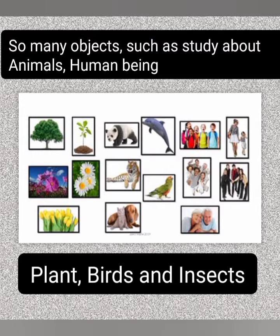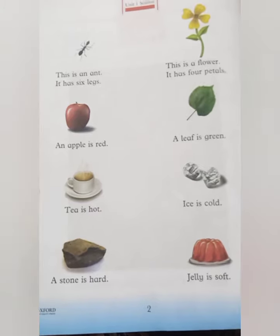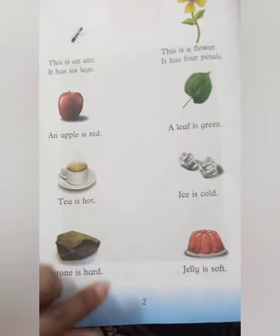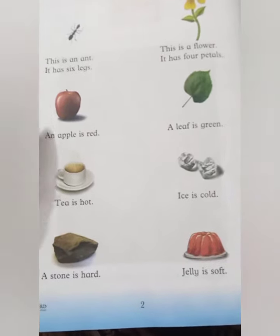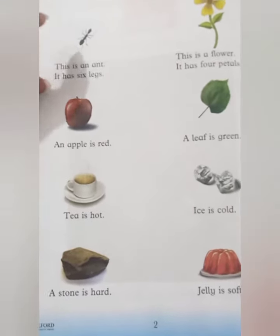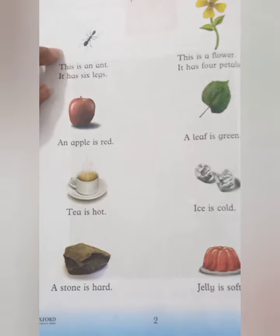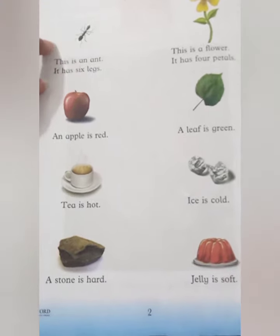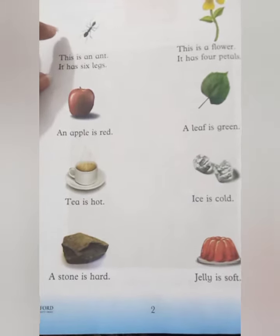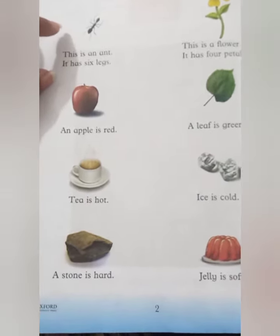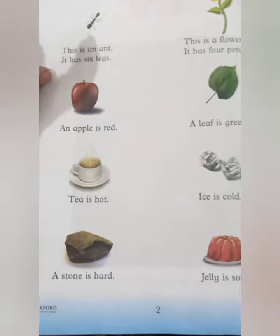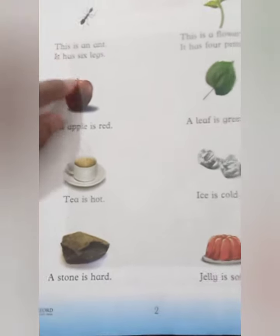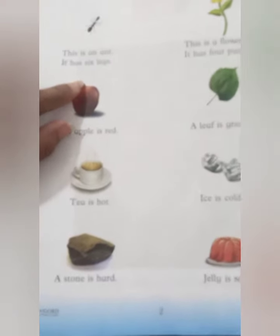Now let's discuss some examples in your book. See page number 2 and 3. What is this? Yes, this is an ant. Tell me, how many legs does an ant have? It has 6 legs.